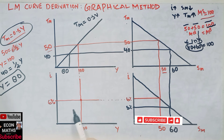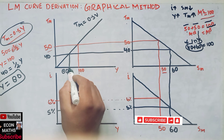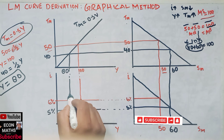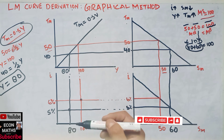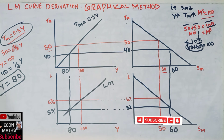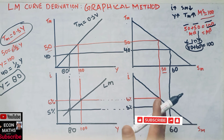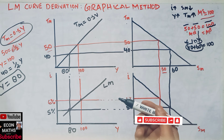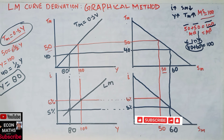We now take r = 5% and Y = 80. The intersection of these two values gives us a second point on the LM curve. Since we need at least two points to draw a line, and we have assumed linear functions for simplicity, joining these two points gives us the LM curve.